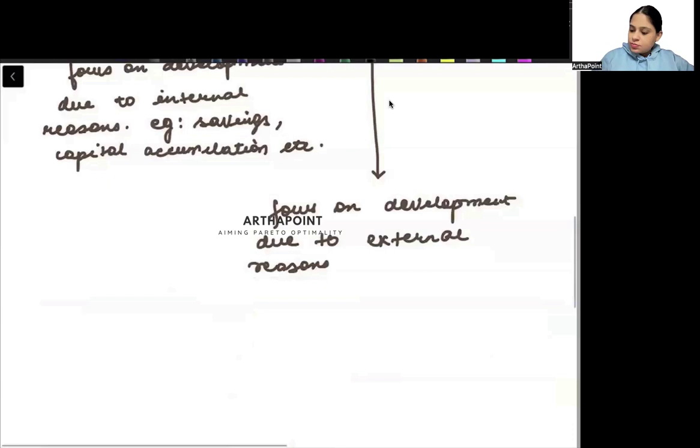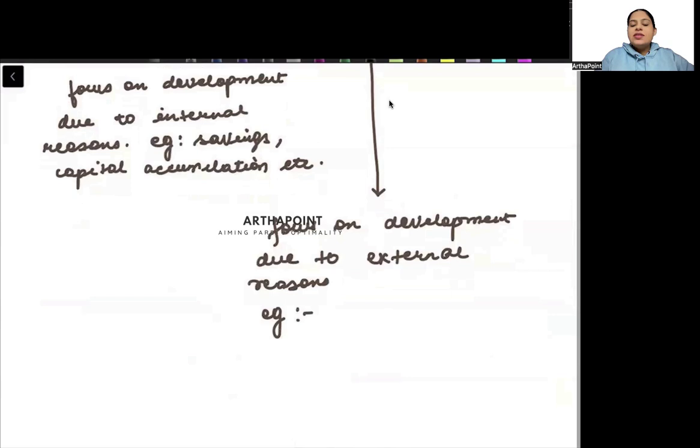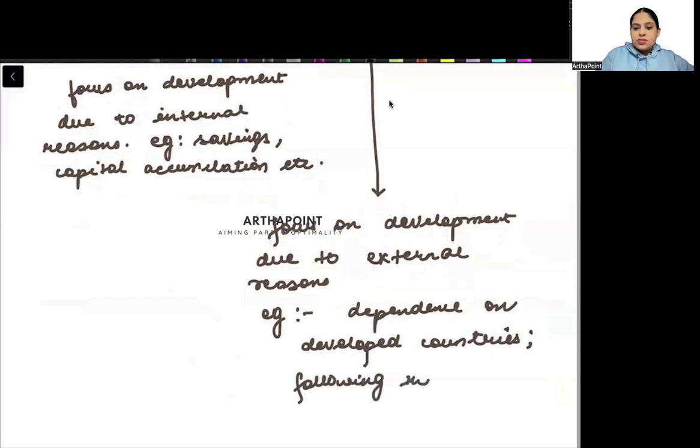For example, what can be the external reasons? The external reasons can be dependence on developed countries. Due to external reasons, following theories, following theories of developed countries, etc.